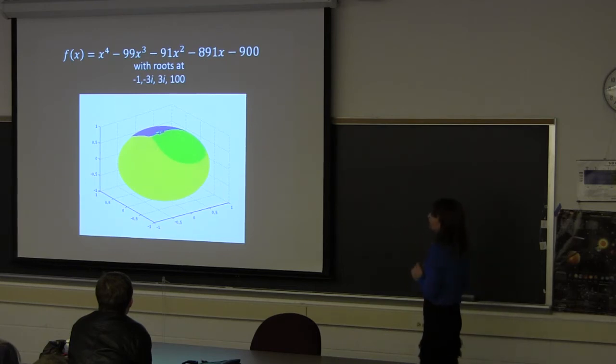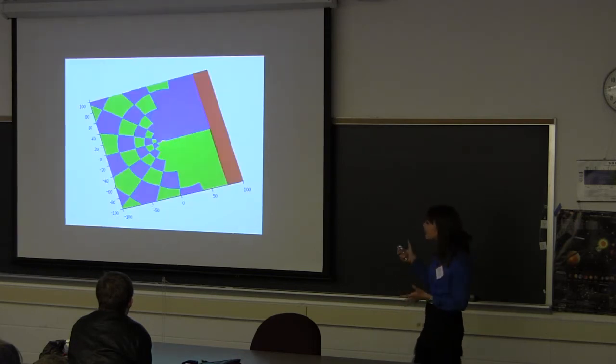Take a look at this polynomial here. We ended up with some weird distortions because that just happens when you're mapping a plane on this sphere. Especially in this case, I'd like you to note the roots. We have negative 1, negative 3i, 3i, and 100. The yellow area is the area converging to negative 1. It appears as though at least two-thirds of these initial points are converging to that negative 1.